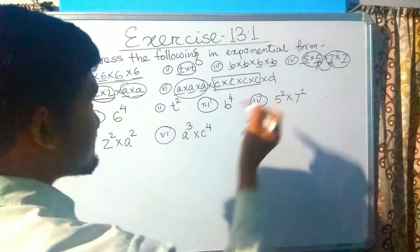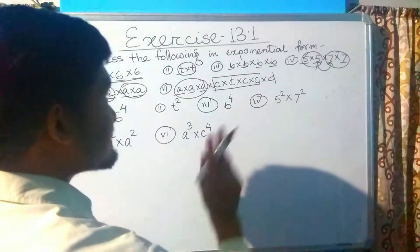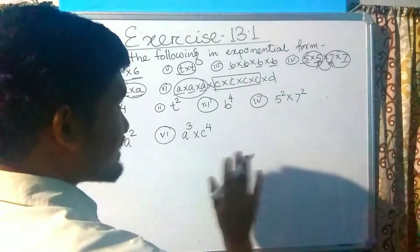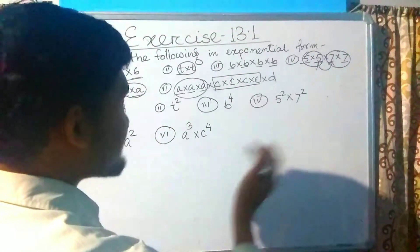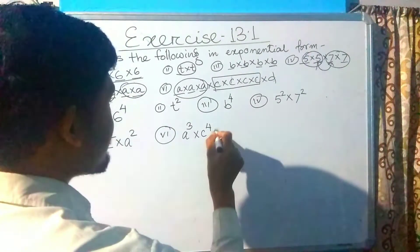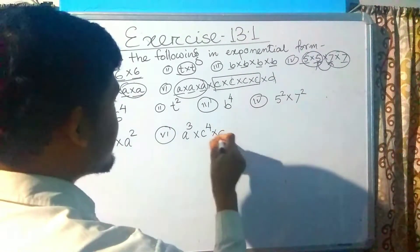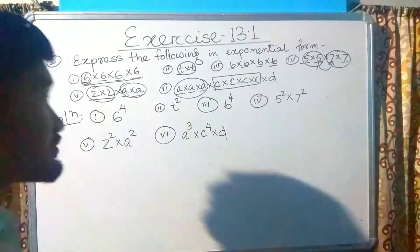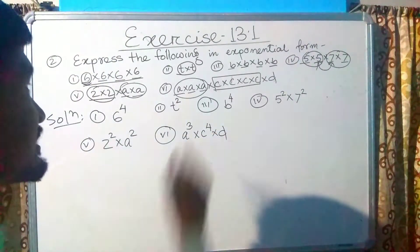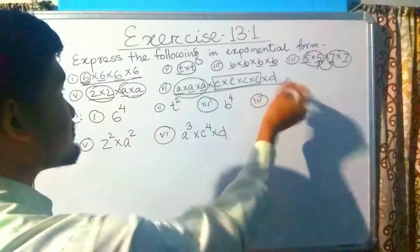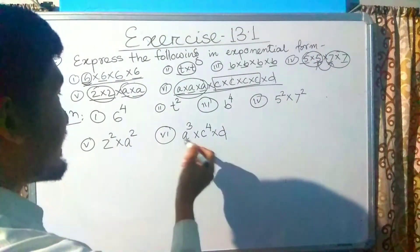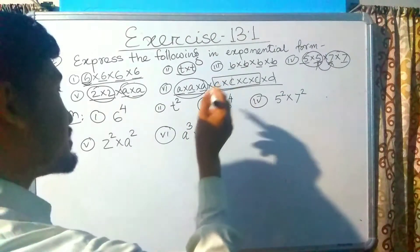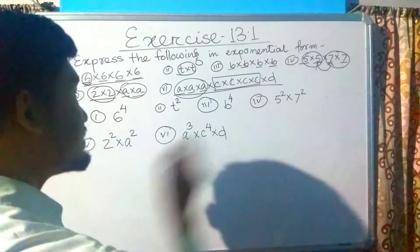So the exponential forms from question 2 are: a cubed, c raised to the power 4, and d. Since d appears only once by itself with no multiplication, it remains as just d.